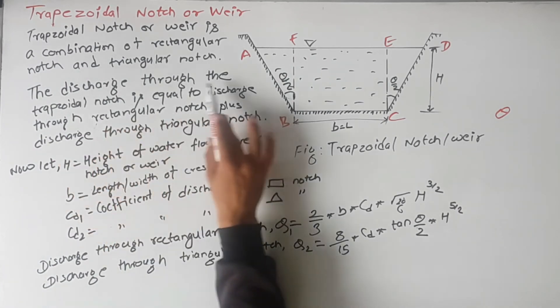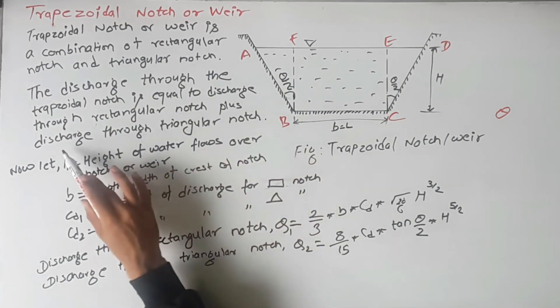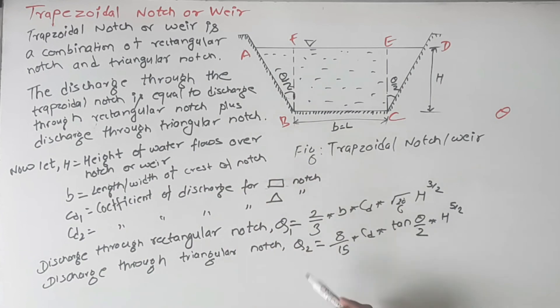Here I have written, the discharge through the trapezoidal notch is equal to the discharge through the rectangular notch plus discharge through triangular notch. So we can add these.